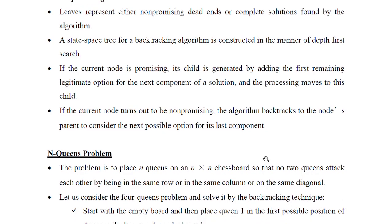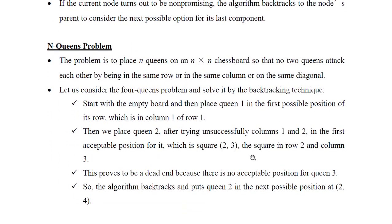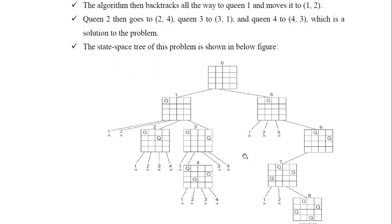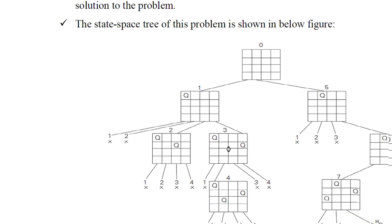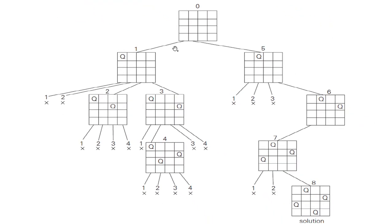Let us see an example of the four-queens problem. This is the state space tree of the four-queens problem. I will try to place the queens on this board such that no two rows, no two columns, or the diagonals will have the same queen.